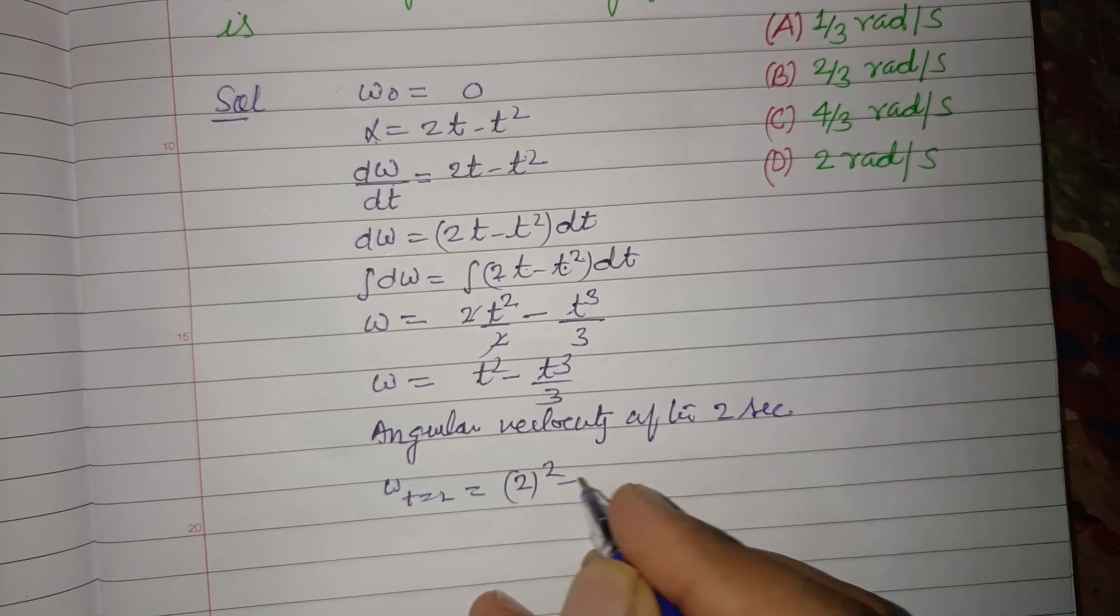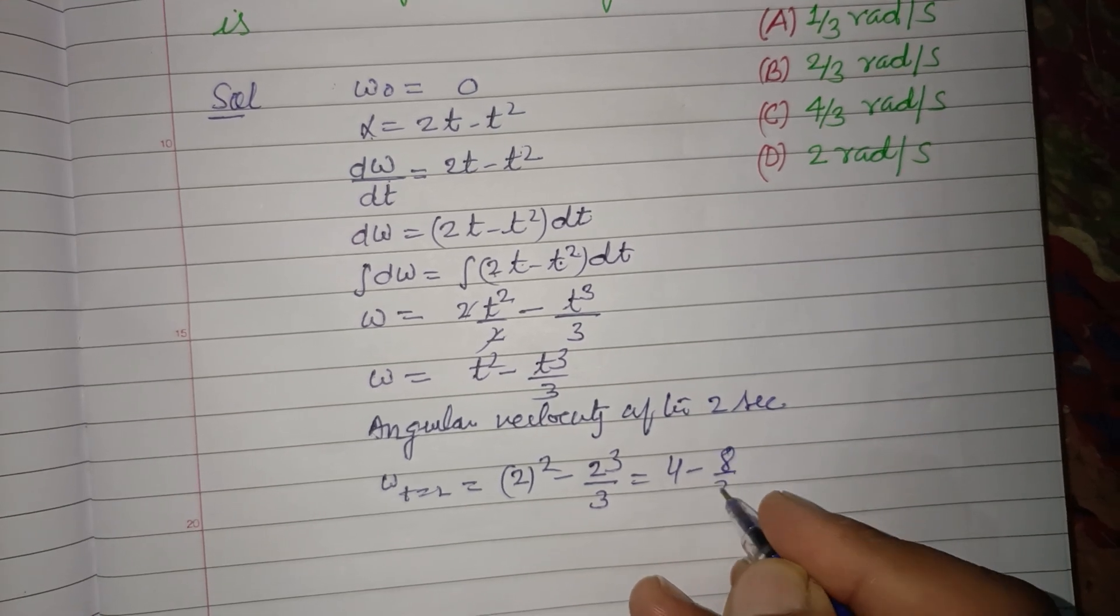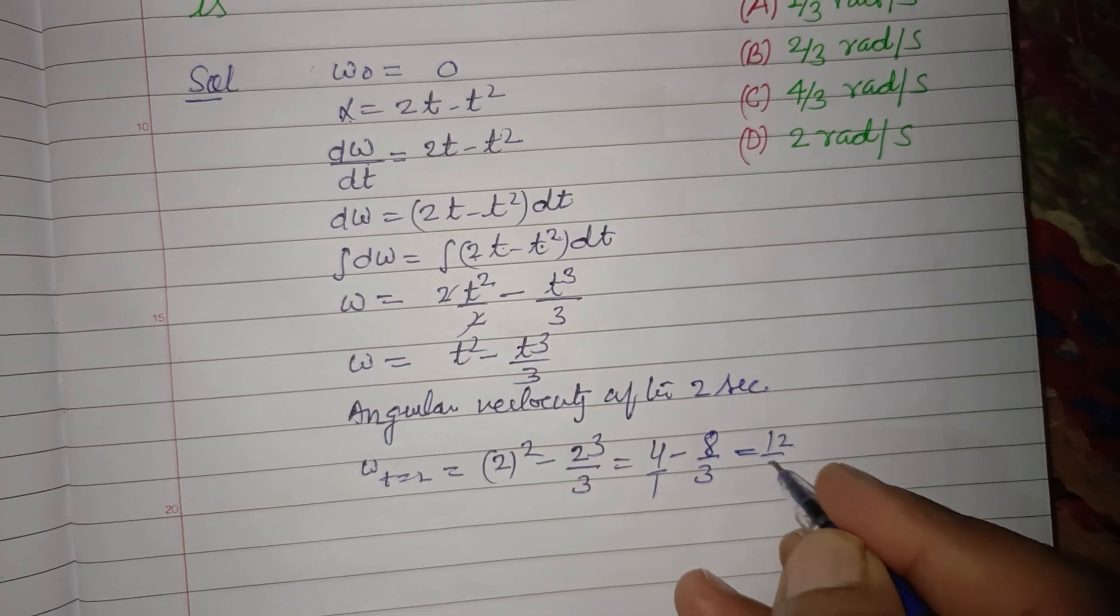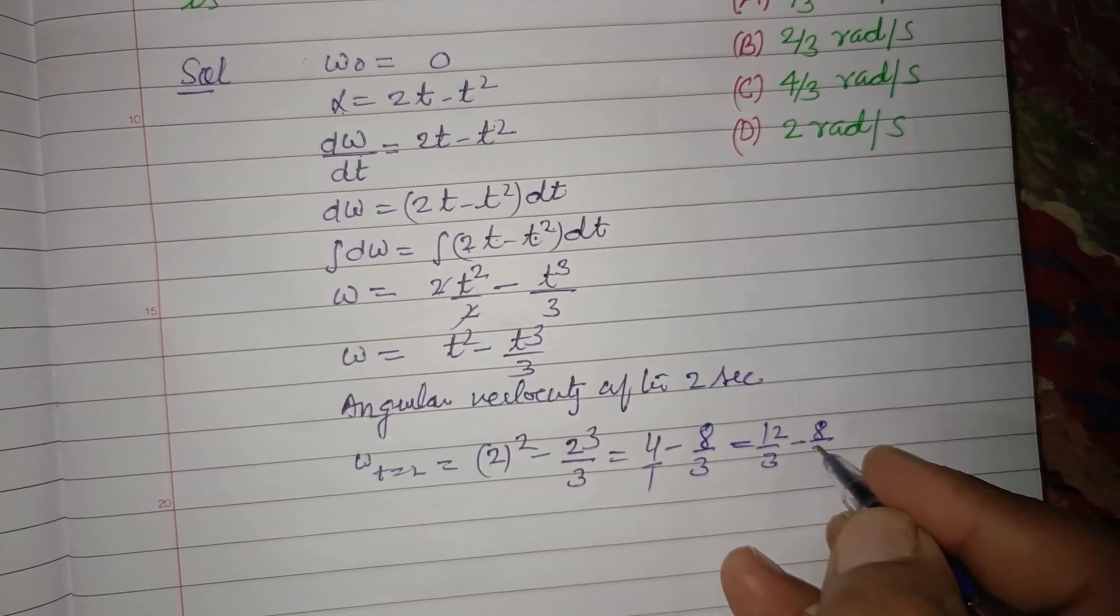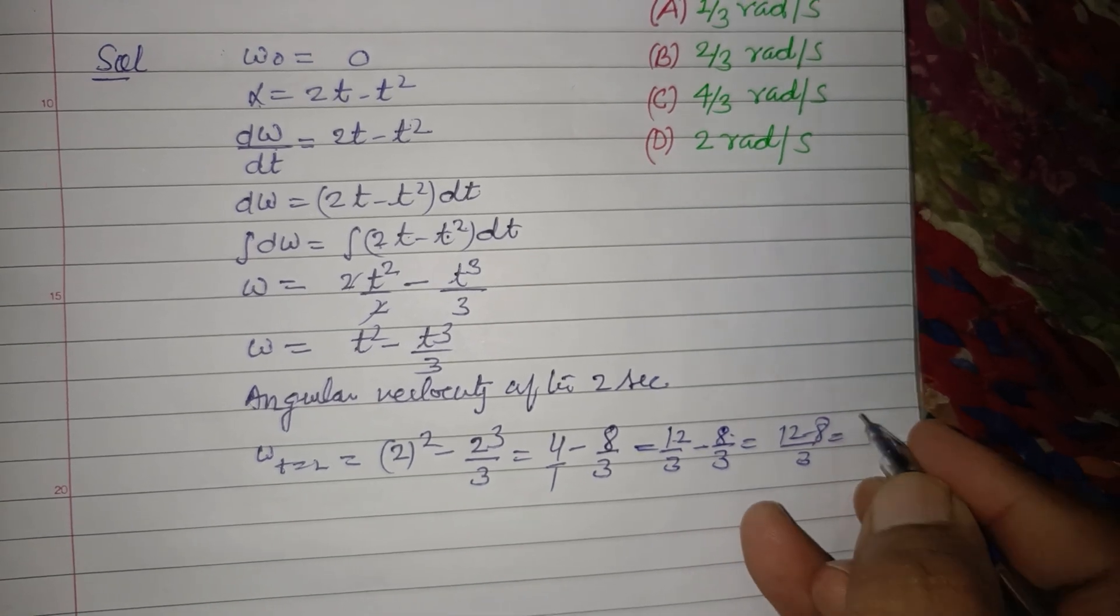2² minus 2³/3, which is 4 minus 8/3. We write it as 12/3 minus 8/3, that's (12 - 8)/3, which is 4/3.